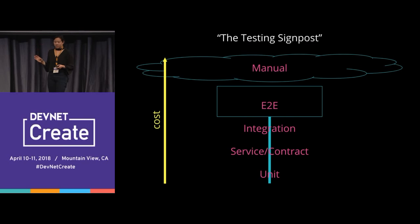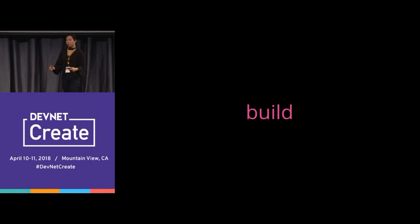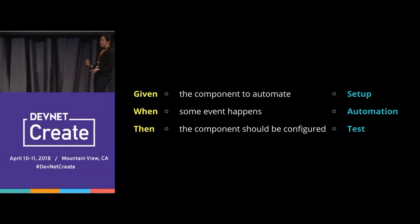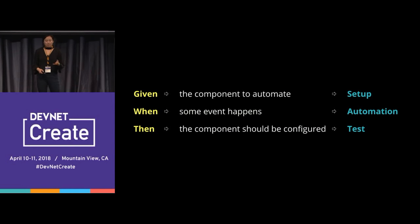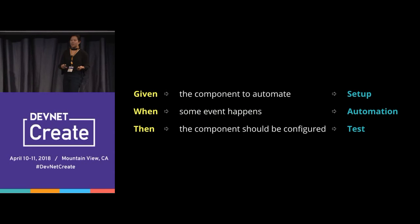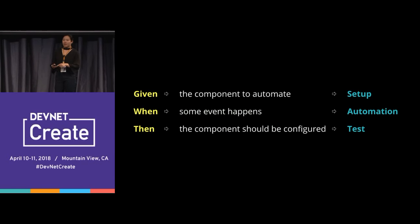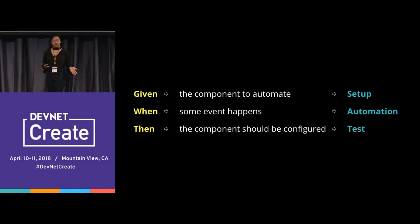Taking this into consideration, what can you do during your build stage? I like using given-when-thens. They're very logical and express events and what happens during automation. So: given I have a component to automate, when some event happens, then the component should be configured. Simple — it's setup, automation, and test.